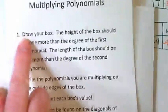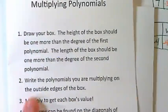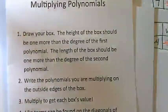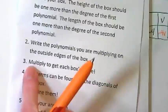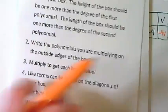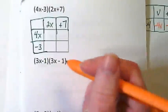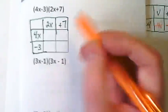So again, step 1 is draw your box. Step 2, write the polynomials you are multiplying on the outside edges of the box. Step 3, multiply to get each box's value. Those steps are the same as we've been practicing, but we're going to get something additional where we'll use step 4 in a moment.